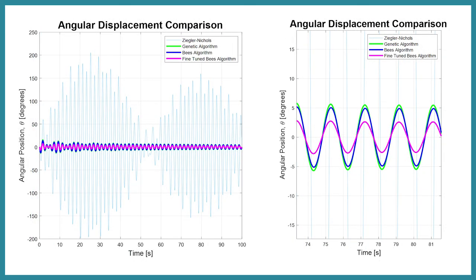The angular displacement of the load was monitored over 100 seconds. Similarly, it can be seen that the Ziegler-Nichols tuning rules did not provide an acceptable control solution to the problem. Again, the fine-slash-manually-tuned method yielded the lowest angular deflections of an approximate range of two and a half degrees from the purely vertical position, while the genetic and bee's algorithms ranged around approximately plus or minus five degrees from the vertical position.